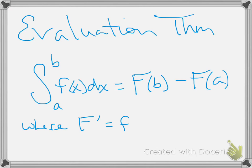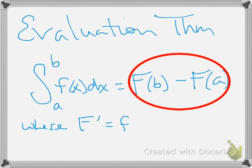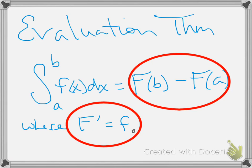The evaluation theorem gives us an analytical way of evaluating a definite integral from A to B of f(x) dx. What this is telling us is we want to find some antiderivative of lowercase f, where capital F prime is equal to lowercase f. An antiderivative — not the most general. I don't need the plus C here because, as mentioned in the previous notes, the plus C will be eliminated in the difference.